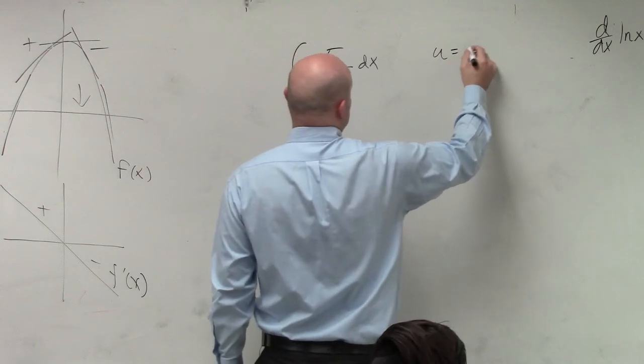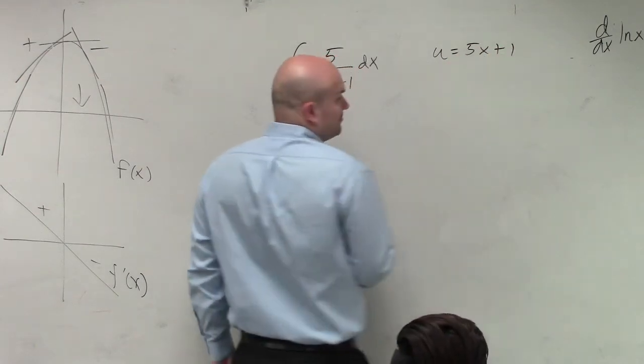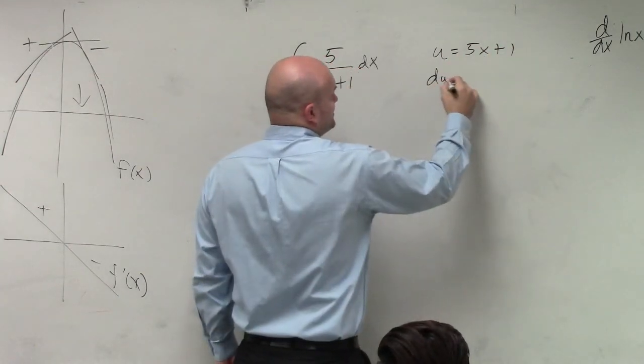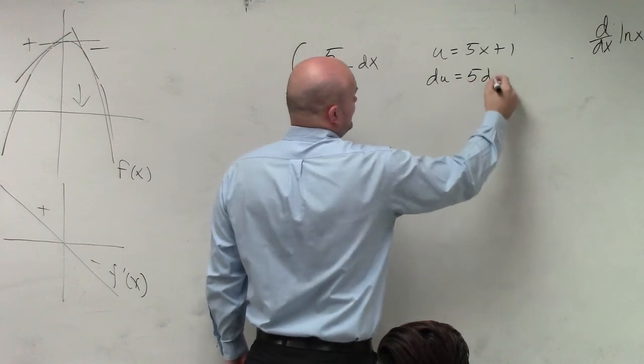So we're going to say u is equal to 5x plus 1. Therefore, du is going to equal 5 dx.